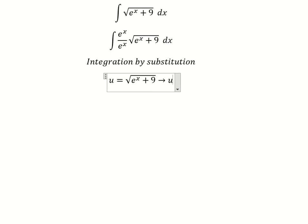After that, we square both sides to cancel the square root. Because we have e to the power of x, I will move this to the left side.